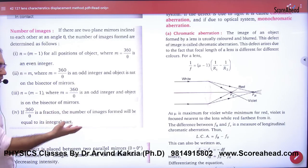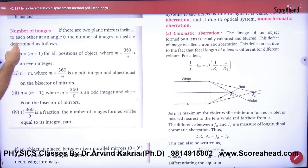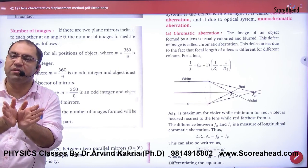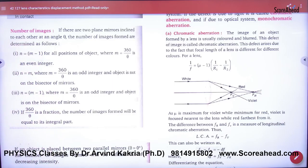And if this fraction comes, like 5.1, then the number of images will count only the integral part. We will leave the decimal. So these rules you will know. How to calculate number of images, if there is some angle given in your mirrors, then mark it.